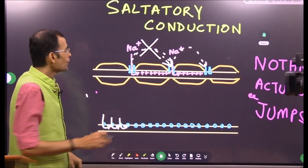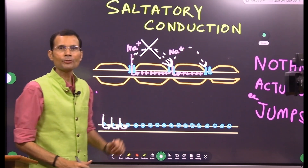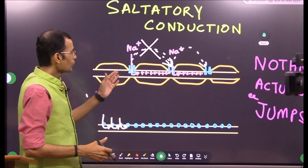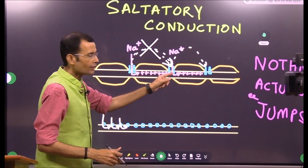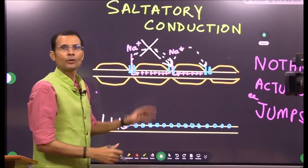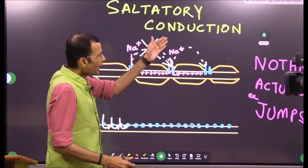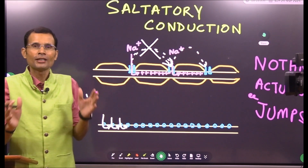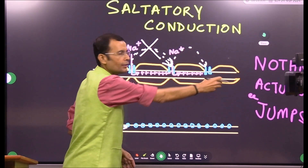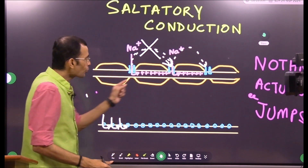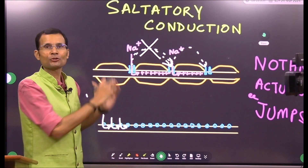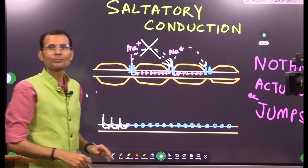The charges spread electrotonically and reach the next node of Ranvier, which is at a long distance. That node of Ranvier has sodium channels, so the positive charges cause it to reach threshold, sodium channels open, and a full action potential develops there. Then sodium flowing in travels to the next node of Ranvier. So it is a combination: action potential at the nodes of Ranvier, and between the nodes there is electrotonic conduction — a passive spread of charge from within the axon.